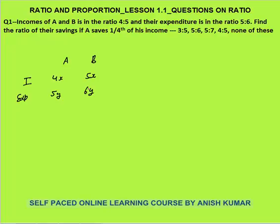Find the ratio of their savings if A saves one fourth of his income. Savings equals income minus expenditure: A's saving is 4x minus 5y, and B's saving is 5x minus 6y. This is the ratio we need to calculate, but we don't know x and y, so we need additional information.